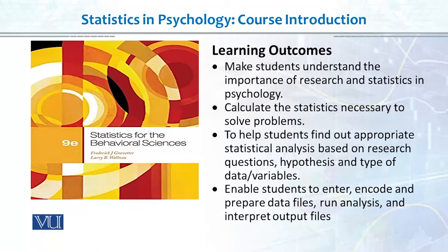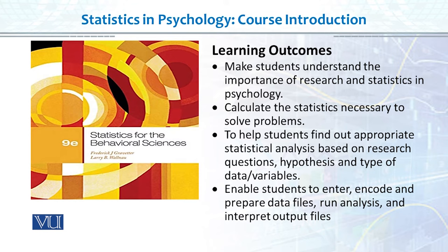Let's talk about the course. Statistics in Psychology is the title of the course. We will be following Gravetter's 9th edition as the main textbook — the 11th edition is also available but there are very few changes between them. Additionally, Andy Field's book is also very good, and I have mentioned 2 to 3 other books in the course outline which will be helpful if you want to learn more about statistics.